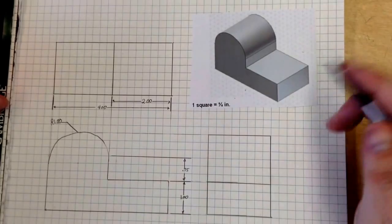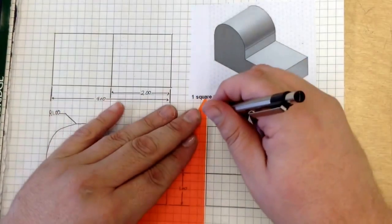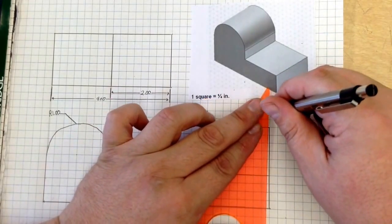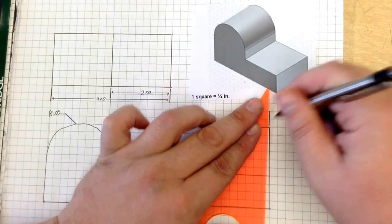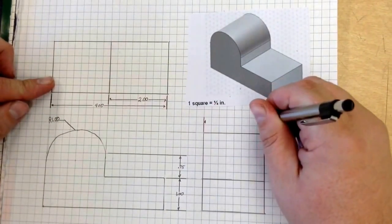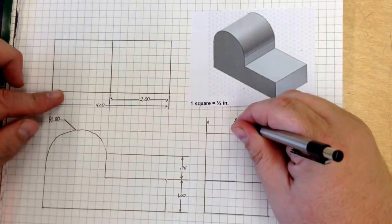Now next we have to contend with the front view and its dimensions. This object is 2 inches wide. So I will make a couple lines in here, have my arrows, 2.00.